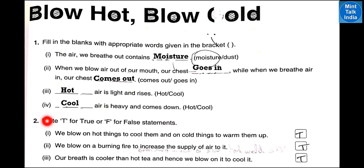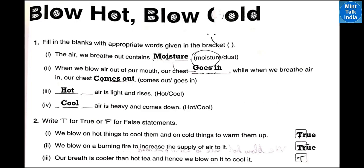Question number 2: write true or false for the statements. Number 1: we blow on hot things to cool them and on cold things to warm them up — that is true. Number 2: we blow on a burning fire to increase the supply of air to it — that is true. Number 3: our breath is cooler than hot tea and hence we blow on it to cool it — that is also true.